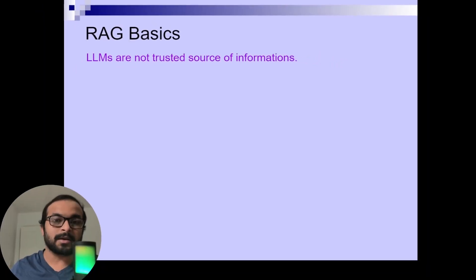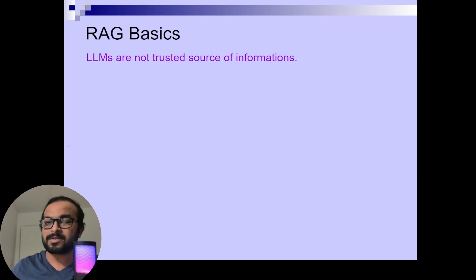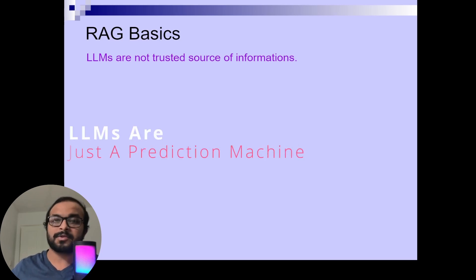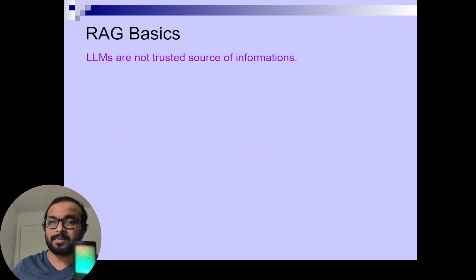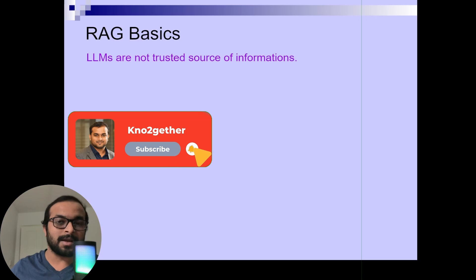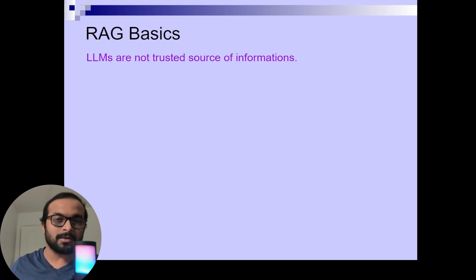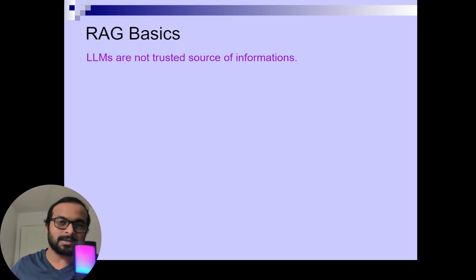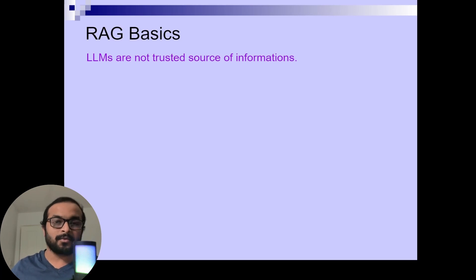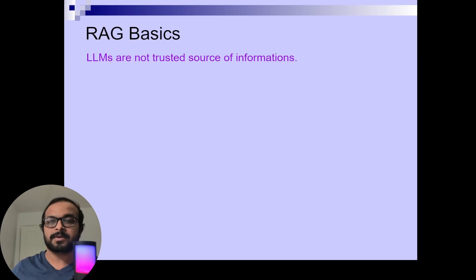When you're using ChatGPT or similar AI tools, they generally produce responses with information that seems to be true. But LLMs are just prediction machines — they might sometimes produce information that seems correct but may not be correct. That is why even ChatGPT writes in its footer that you should always verify the information. What LLM or ChatGPT is doing is taking your question and trying to predict the next token or words to create the response. So please remember that LLMs are not a trusted source of information. That is where, if you want to build a system with a lot of information to be processed by AI, you should provide that information into the context of the LLM — and that is where the concept of RAG or Retrieval Augmented Generation comes into the picture.